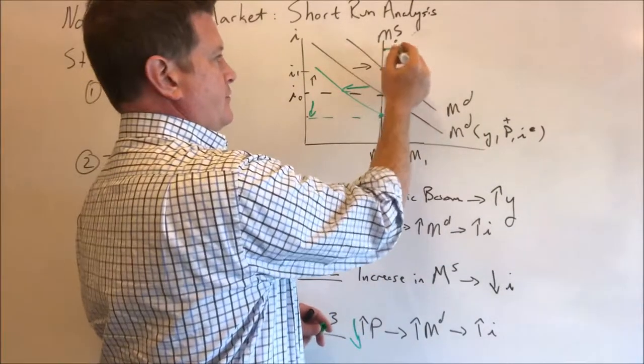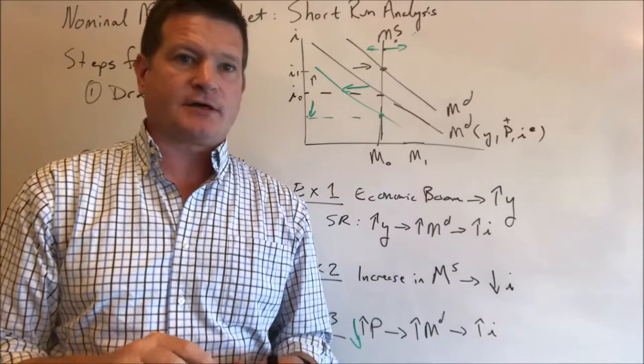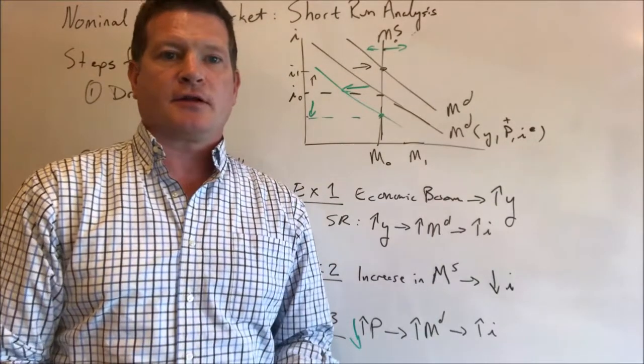So money supply can move to the right or to the left. All of those things again are analyzing how those affect the nominal interest rate.